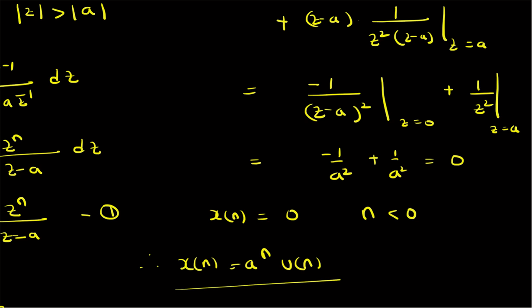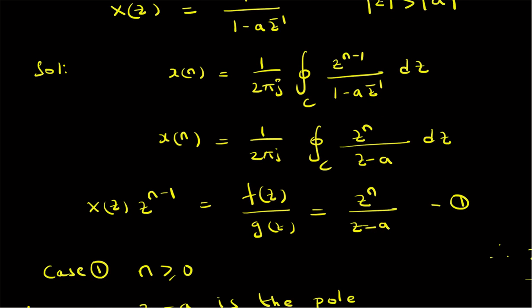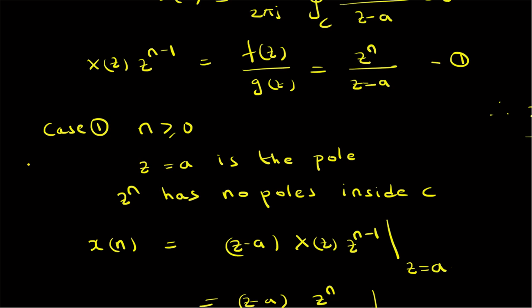To summarize: we looked at an example illustrating the evaluation of an inverse z-transform from a given X(z) using the residue method, based on Cauchy's integral theorem. We started with x(n) = (1/2πj)∮_C z^(n-1)/(1 - az⁻¹) dz, rewrote it with positive powers of z, and identified X(z)·z^(n-1) = z^n/(z - a). In Case 1, n ≥ 0, there is only one pole inside C.